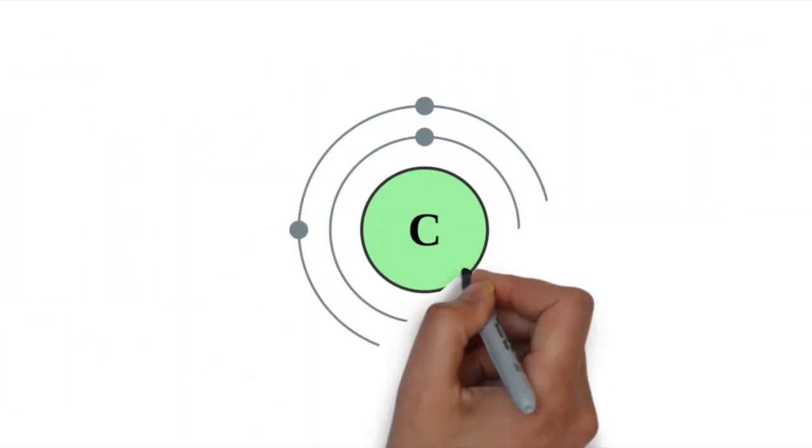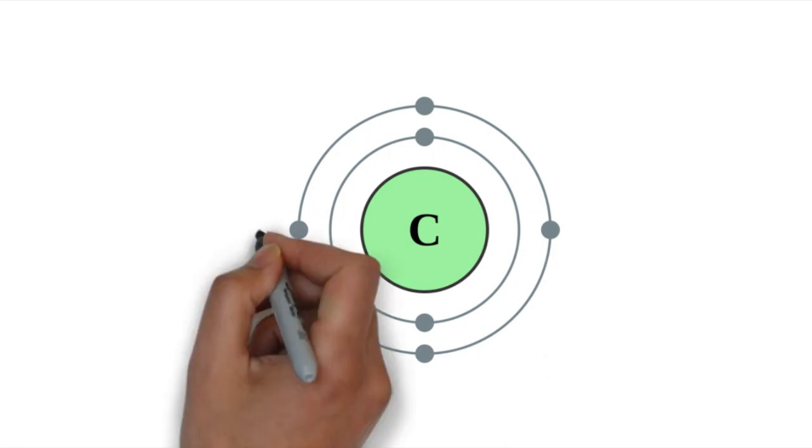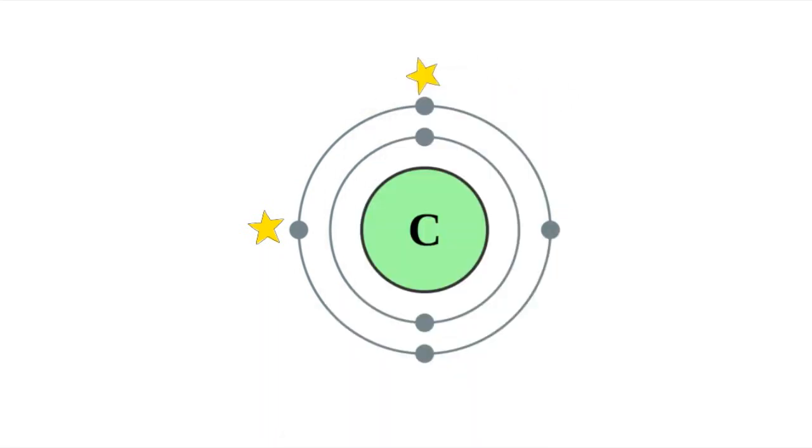The way carbon is structured, two electrons completely fill the inner shell or orbit, but the next shell needs eight, and there are only four electrons there. So it is ready, willing, and able to happily find four electrons to fill it and make it stable.